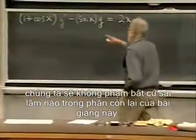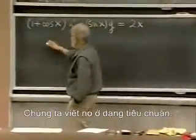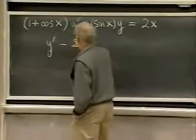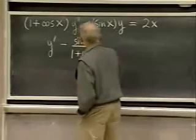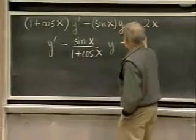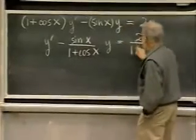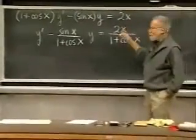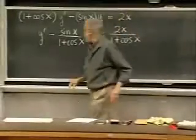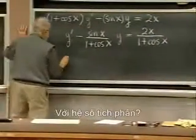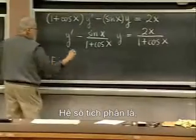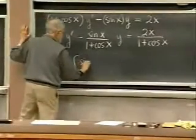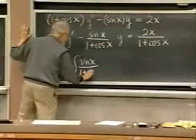We're not going to make any mistakes for the rest of this lecture. So what do we do? We write this in standard form. It's going to look like y prime minus sine x divided by one plus cosine x times y equals 2x. What's the integrating factor? We want to calculate the integral of negative sine x over one plus cosine x — that's the integral of p dx — and after that, we have to exponentiate it.